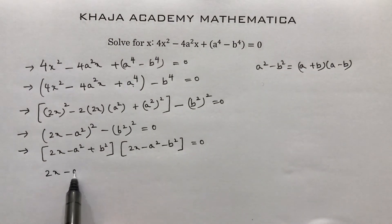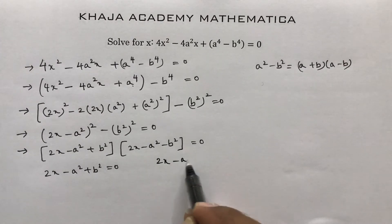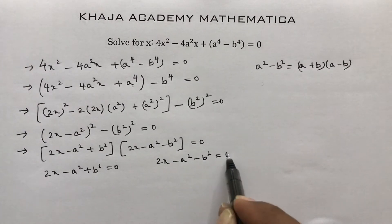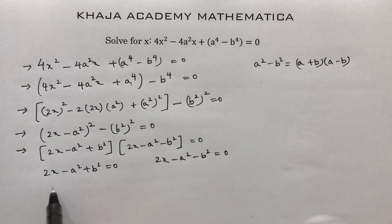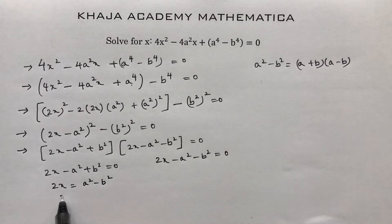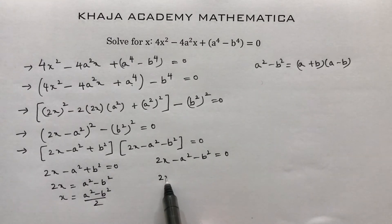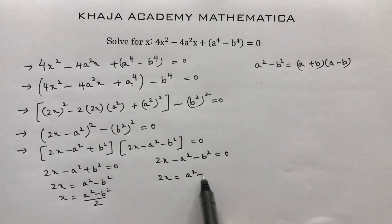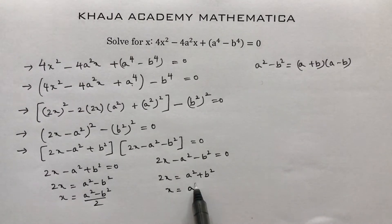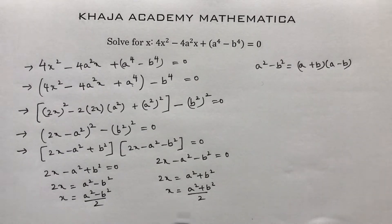Setting each factor to zero: First, 2x - a² + b² = 0 gives x = (a² - b²)/2. Second, 2x - a² - b² = 0 gives 2x = a² + b², so x = (a² + b²)/2. These are the two values of x.